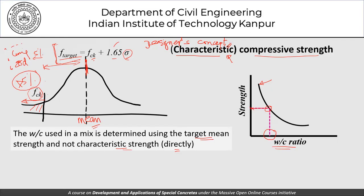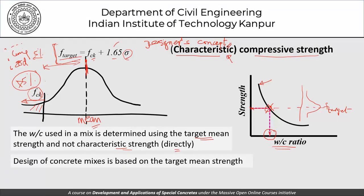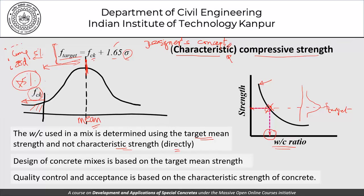The strength at a given point will be distributed for a certain value, and that value is the target strength. Design of concrete mixes is based on the target mean strength, and quality control and acceptance is based on the characteristic strength of concrete. The target mean strength largely remains on the files — the designer is concerned only with whether it is M20 or M30 concrete, meaning the characteristic strength is 20 or 30 MPa respectively.